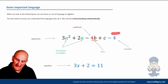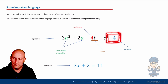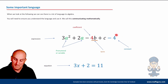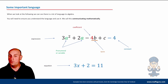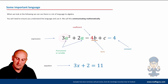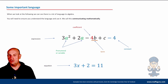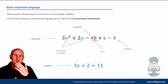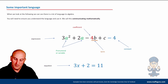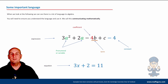Anything without a letter that's stuck on its own is generally called a constant. The minus sign belongs to the four - really, really important. Any numbers in front of letters are coefficients. So that coefficient would be three. The coefficient of this would be plus two - we'd normally just say two. The coefficient here would be minus four, because the minus sign belongs to the four.